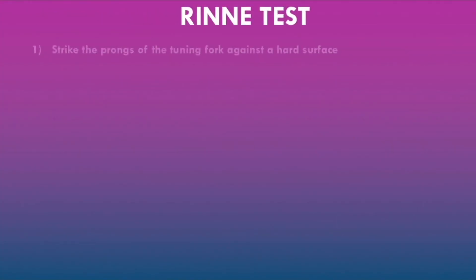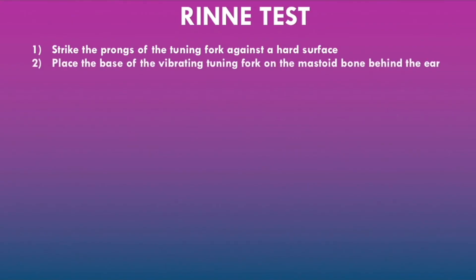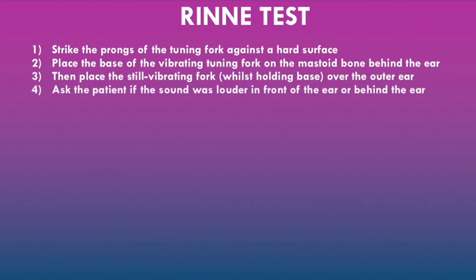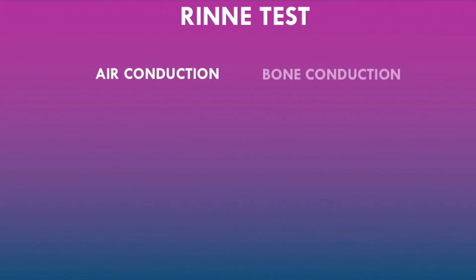To perform the Rinne test, strike the prongs of the tuning fork against a hard surface, place the base of the vibrating tuning fork on the mastoid bone behind the ear, then place the still-vibrating fork over the outer ear, and ask the patient if the sound was louder in front of the ear or behind the ear.